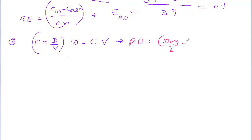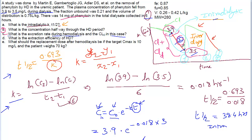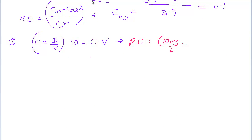The concentration at the end of dialysis is 3.5 mg/L, and we want to reach 10 mg/L. So the replacement dose equals the difference in concentrations — from 3.5 to 10 mg/L — times the volume of distribution. The units work out as mg/L times L, giving mg for the dose.